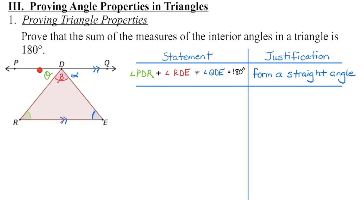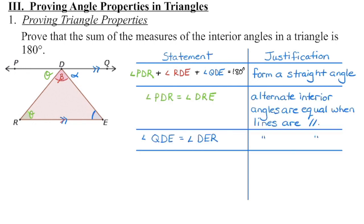We created this second line parallel to the base of our triangle. So we know that — looking at the Z pattern — these are alternate interior angles, which happen to be equal when lines are parallel. Over here, we also have another set of alternate interior angles. So we know that angle PDR is equal to angle DRE. Make sure you note that alternate interior angles are equal, but only because these lines are parallel. That piece is really important — if the lines aren't parallel, that's not a true statement.